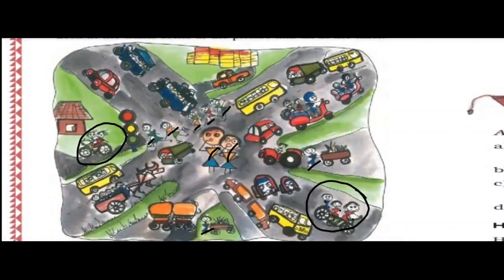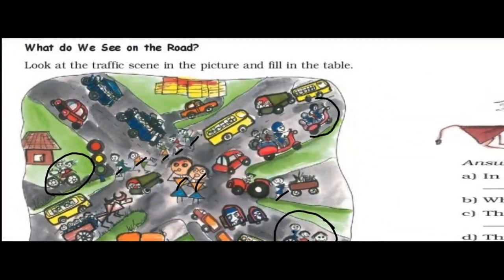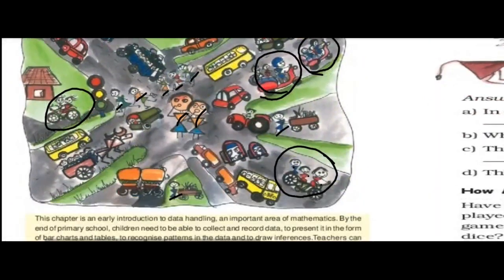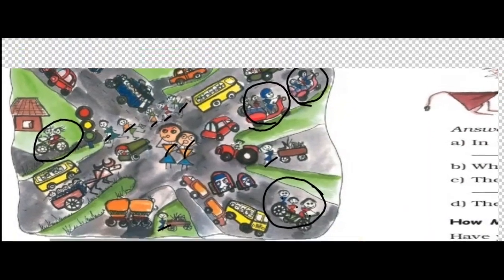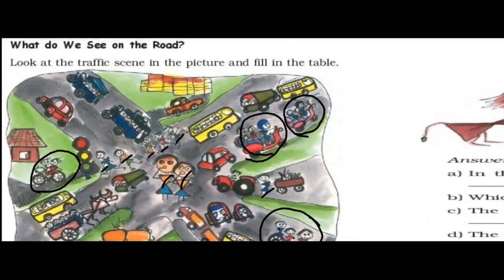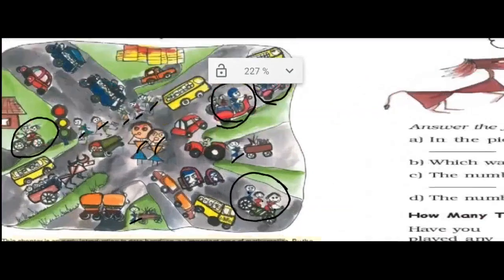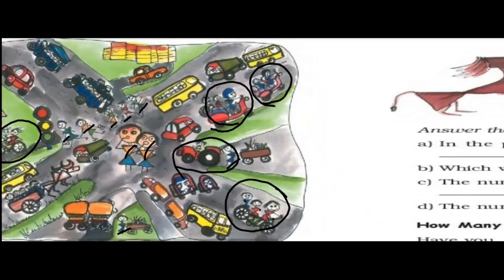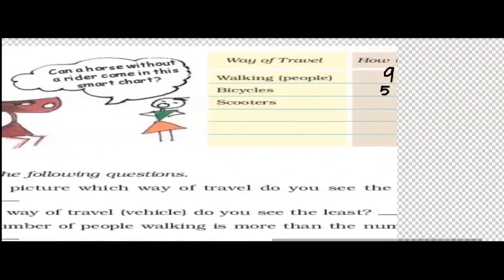Now, in the scooters — let us see how many people are there on scooters: 1, 2, 3, 4, 5, and here is also one scooter, so 6 people are there on scooters. We will write 6 people.